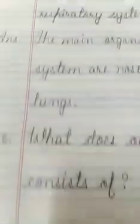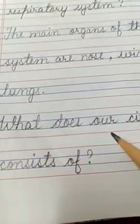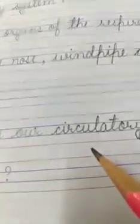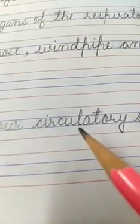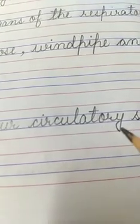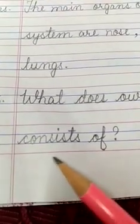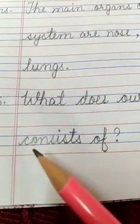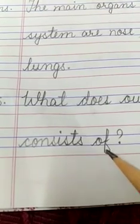Now, come to question number 5. What does our circulatory system, S-Y-S-T-E-M, system consists of C-O-N-S-I-S-T-S, consists of, question mark.